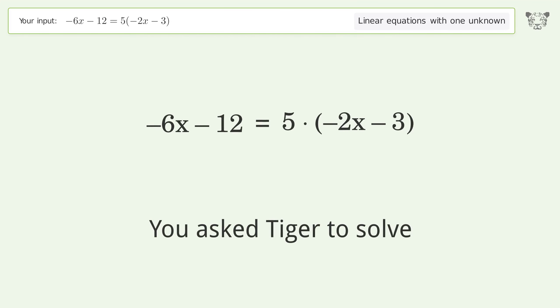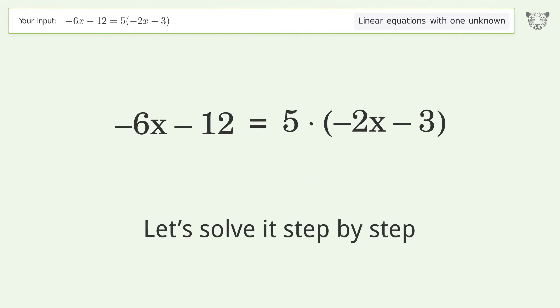You asked Tiger to solve this. It deals with linear equations with one unknown. The final result is x equals negative 3 over 4. Let's solve it step by step.